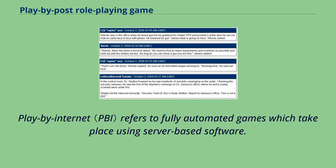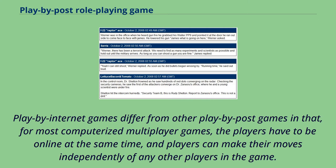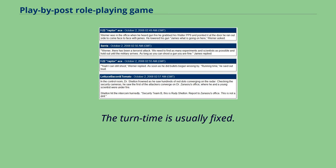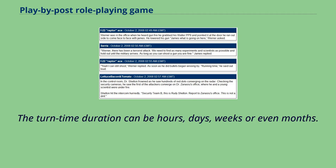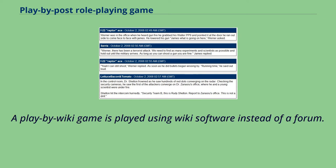Play-by-internet refers to fully automated games which take place using server-based software. Play-by-internet games differ from other play-by-post games in that, for most computerized multiplayer games, the players have to be online at the same time, and players can make their moves independently of any other players in the game. The turn time is usually fixed. A server updates the game after the turn time has elapsed, evaluating all the players' moves sent to the server. The turn time duration can be hours, days, weeks, or even months.